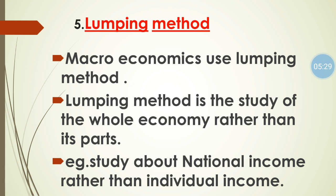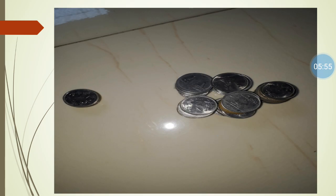Number five: Lumping Method. Macroeconomics uses the lumping method, which means the study of the economy as a whole rather than in parts. Lumping method means study on an aggregate level, not on an individual level. For example, when we study national income that is macro, and when we study individual income that is micro. As you can see in the picture, on one side there is the income of an individual person and on the other side there is national income. When we study national income rather than individual income, that is macroeconomics.